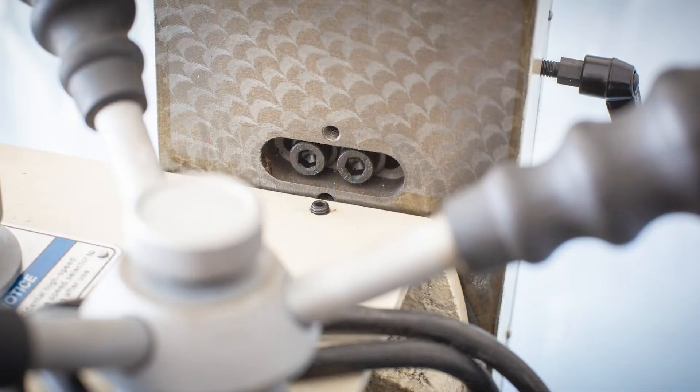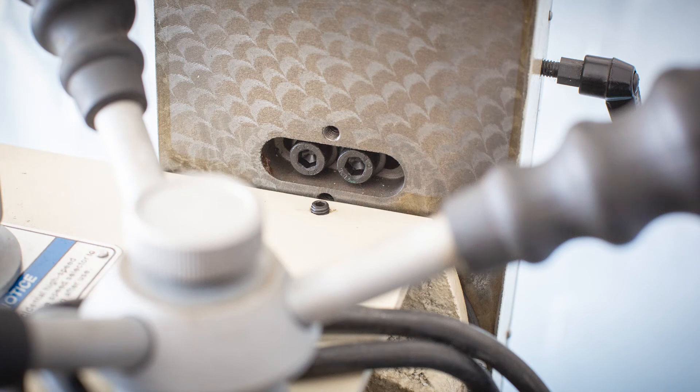Before the headstock can be removed from the z-axis slide, a set screw behind the down-feed handle must be loosened. Here it can be seen partly sticking up out of the headstock.